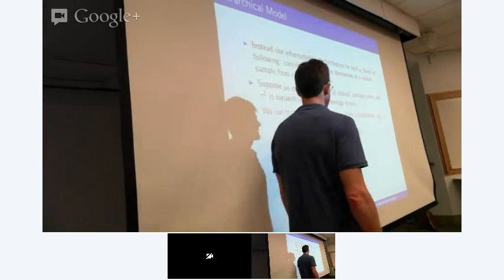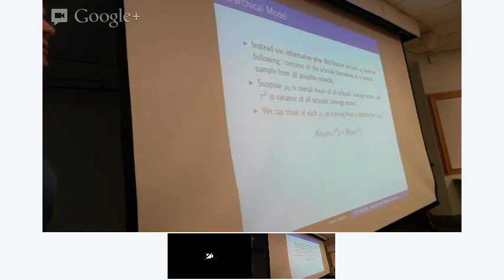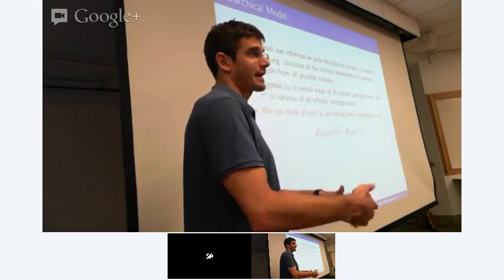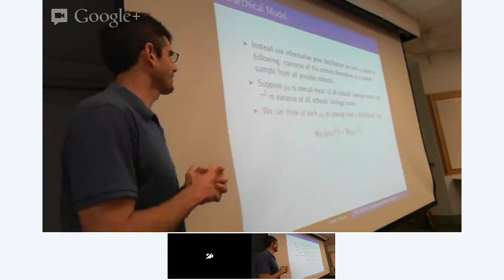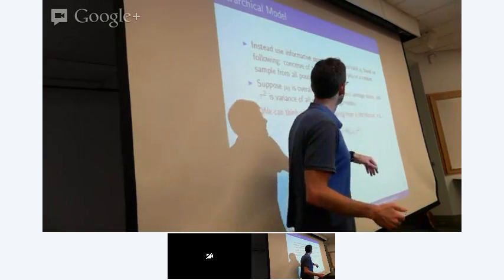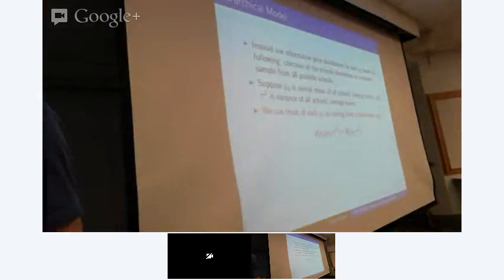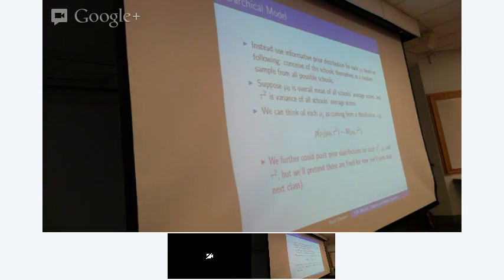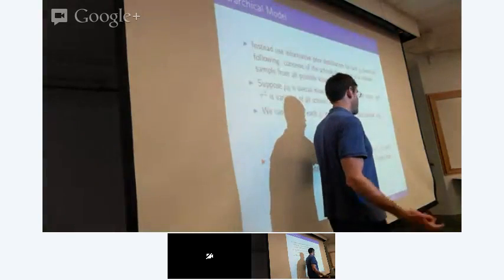As tau gets small, schools are similar in average test scores. As tau gets bigger, schools become more variable. This is a variance components model with two components: variation among schools controlled by tau squared, and variation within a school controlled by sigma_j squared. We might expect more variation among students within a school than between schools, but not necessarily for very disparate schools. If we're doing Bayesian inference, a fundamental part of the problem is inferring mu_naught, tau squared, and the sigma_j's — we don't want to fix these in advance.